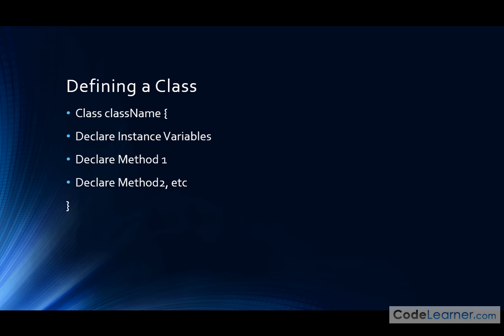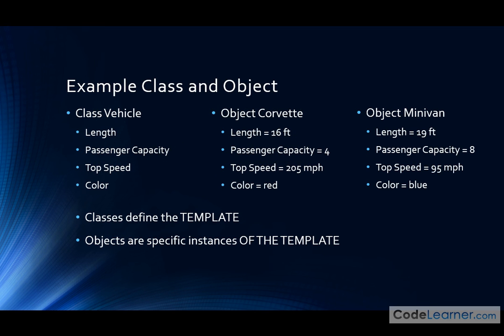That's really all I want to share in this particular lesson. The most important thing to take away is that the class defines a template, and objects are specific instances of the template. When you create and reserve something in memory of this form, that is called an object. Now as you read Java books or listen to the next lesson, you'll know what these things are. In the next lesson, we'll write some code, create a class, and create objects from it — taking it step by step to make sure nobody gets lost. Follow me to the next lesson where we will define our first class in Java.